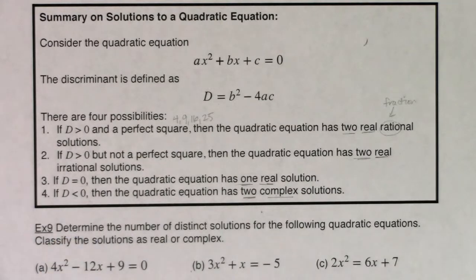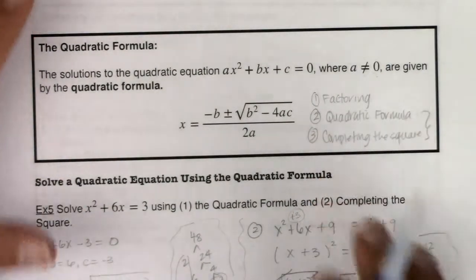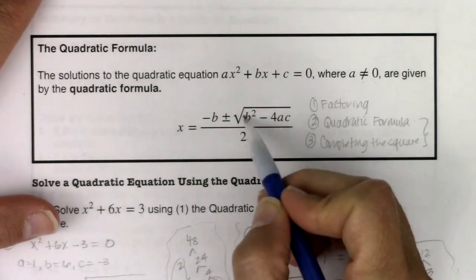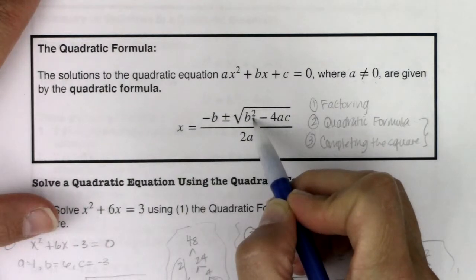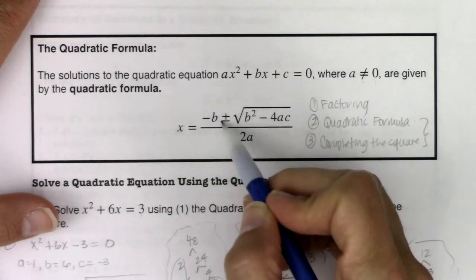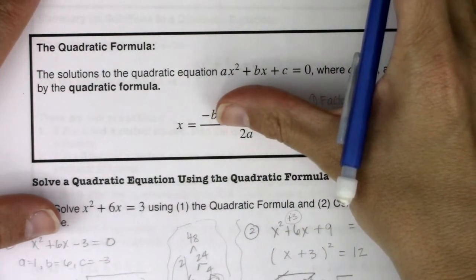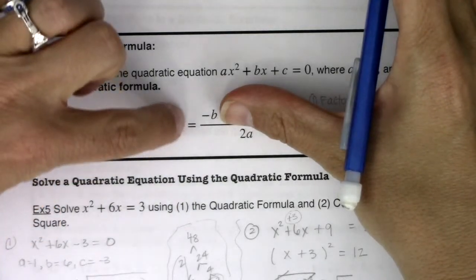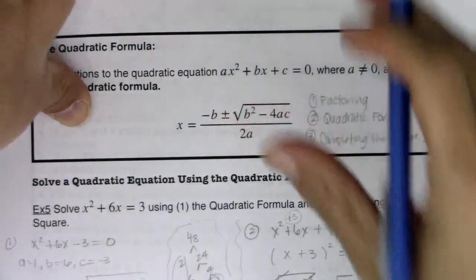If your discriminant is ever 0 exactly, you're going to have one real solution. Let's think about why. If I go back to my quadratic formula, imagine that the quantity under this radical was 0. Then I would take the square root of 0, which would also be 0. I would take negative b plus 0 and negative b minus 0, and it would just be negative b. So when your discriminant is 0, the only solution you wind up getting is negative b over 2a.